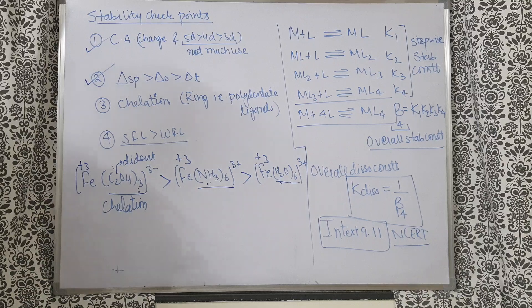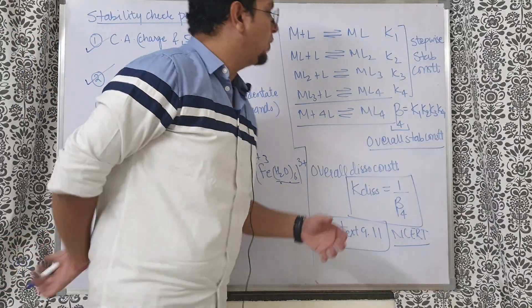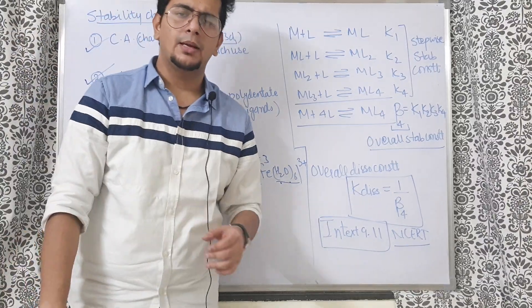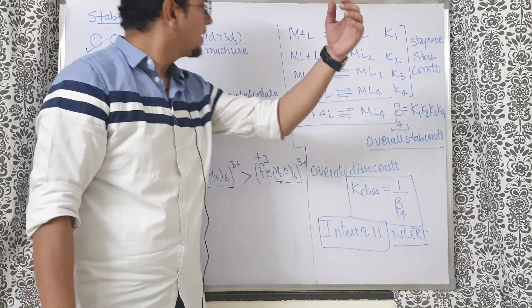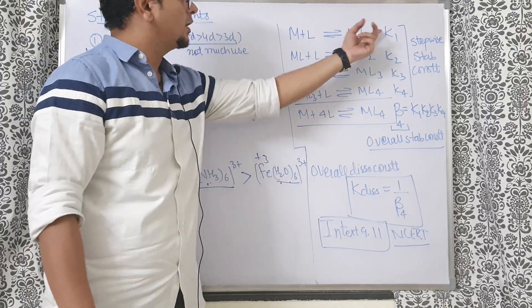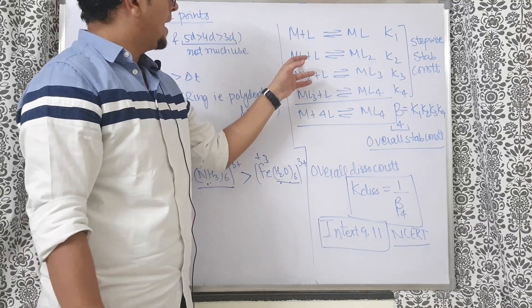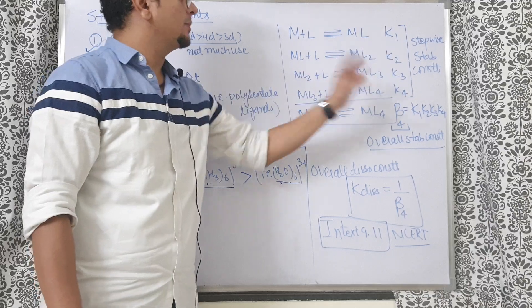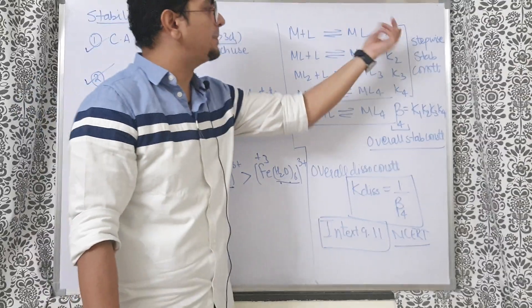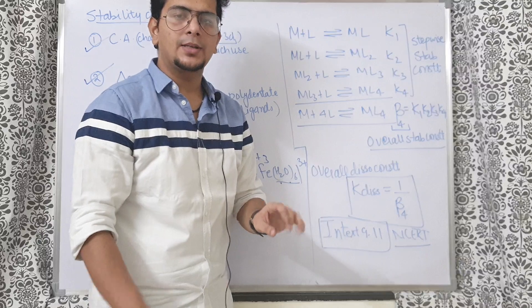Next, this will remind you a little bit about equilibrium chapter. You might feel a little nostalgic about it. Metal plus ligand ML equilibrium constant K1. ML plus L gives ML2. ML2 plus L, this way we got four equilibrium constants. These are called stepwise stability constants.